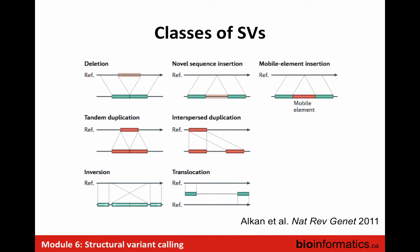Here's a more visual representation of these types. Deletion: the reference genome lost that copy. Novel insertions relative to the reference: there's a new piece in the genome you've sequenced. A mobile element insertion is similar, but the trick is that particular piece of DNA is also found in lots of other regions of the genome, making it challenging to detect. Tandem duplication: the same region gets copied next to itself. Interspersed duplication: the two segments are not next to each other. Inversion: a whole section of the genome gets flipped. Translocation: two chromosomes exchanging segments.